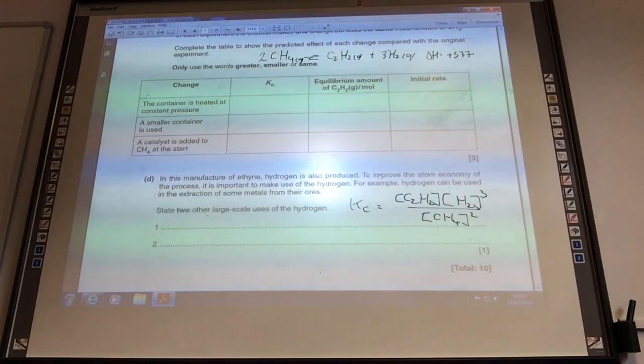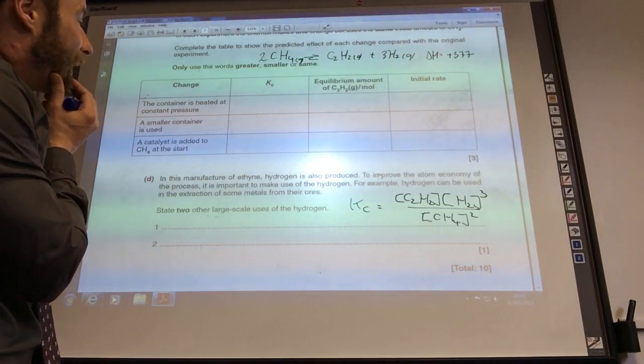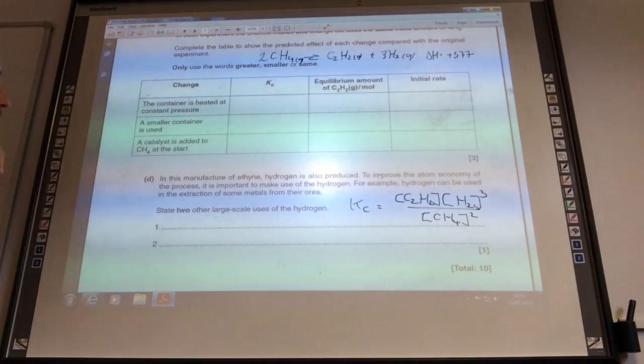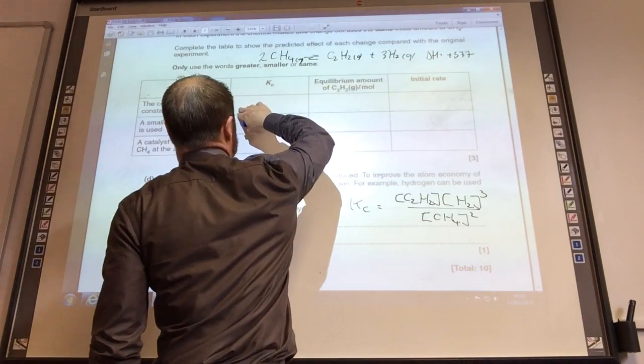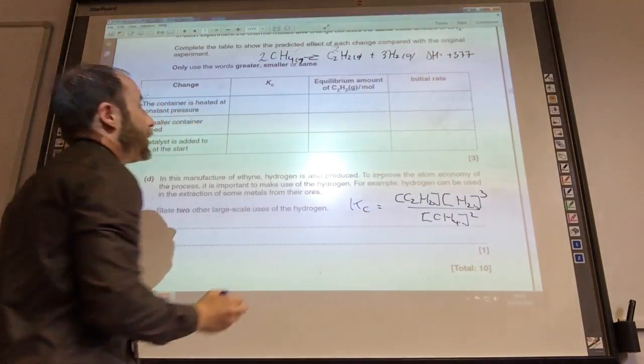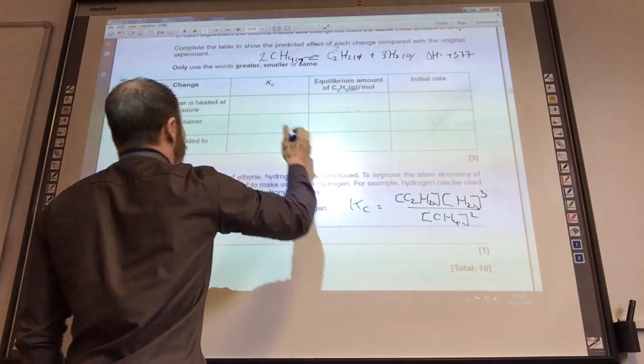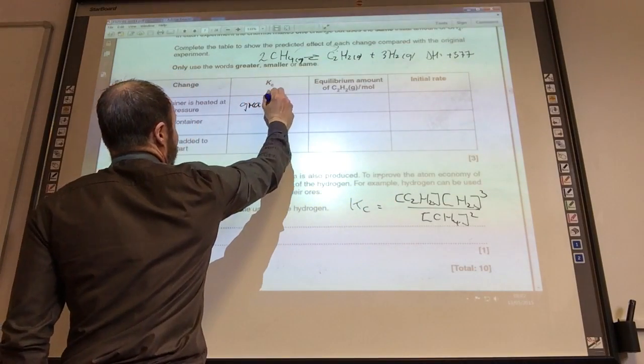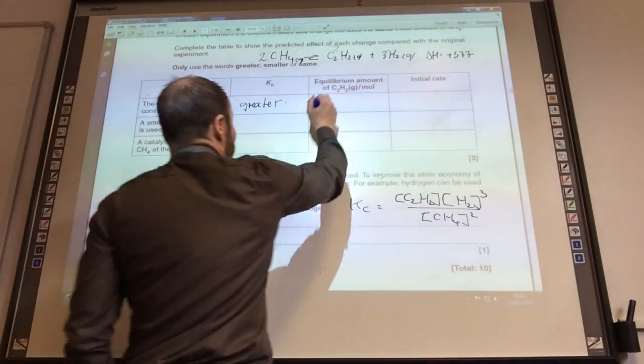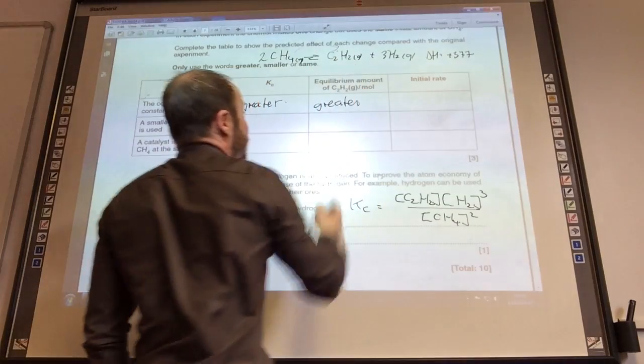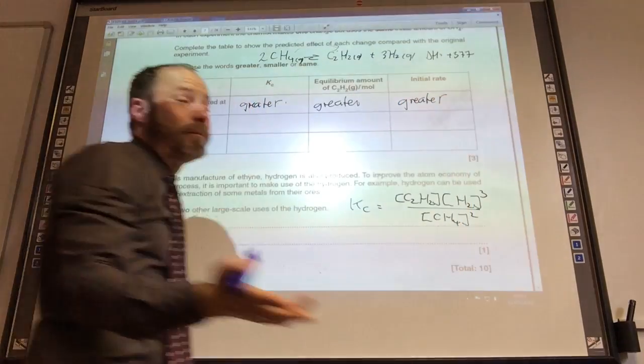So now we need to look at three changes and the effect on Kc, equilibrium amount of C2H2, and the initial rate. So the first thing is I'm going to heat it up. Remember they told us it was an endothermic reaction. So when I heat something up from Le Chatelier, I know it goes in the endothermic direction. So what's going to happen to Kc? Well, if it's going that way, this value is going to get greater. Equilibrium amount of C2H2, well again that is going to be greater because I'm shifting this direction. And the rate is also going to be greater because of higher temperature. Temperature speeds reactions.